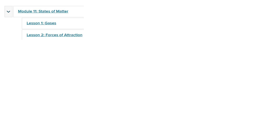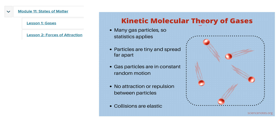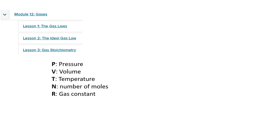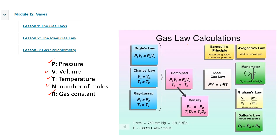In term 3 we studied states of matter — halat al-mada. We covered the Kinetic Molecular Theory of gases and its five main concepts. Then in module 12 we focused on gases and calculations of their properties — mainly pressure, volume, temperature, number of moles, and the gas constant. So we covered gas laws: Boyle's law, Charles' law, Gay-Lussac's law, and when combined, the ideal gas law PV = nRT. We also studied the manometer, Graham's law, Dalton's law, and Avogadro's law.